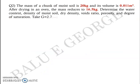Next question, number 2. The mass of a chunk of moist soil is 20 kg and its volume is 0.011 m³. After drying in an oven, the mass reduced to 16.5 kg. Determine the water content, density of moist soil, dry density, voids ratio, porosity and degree of saturation assuming g or specific gravity to be 2.7.